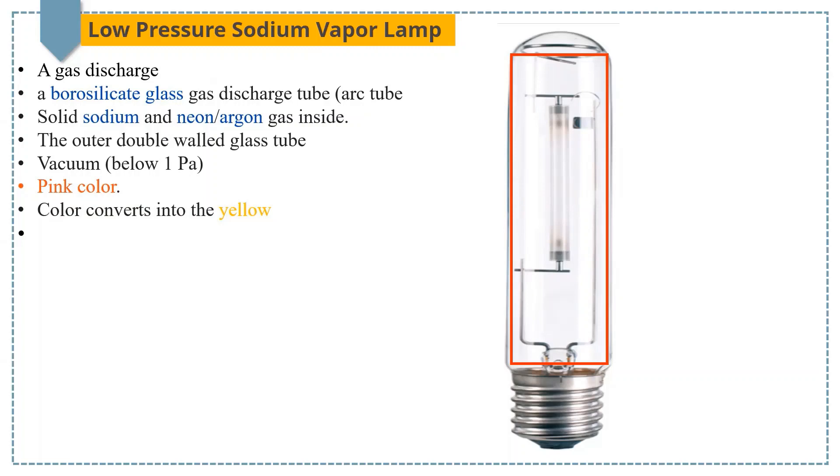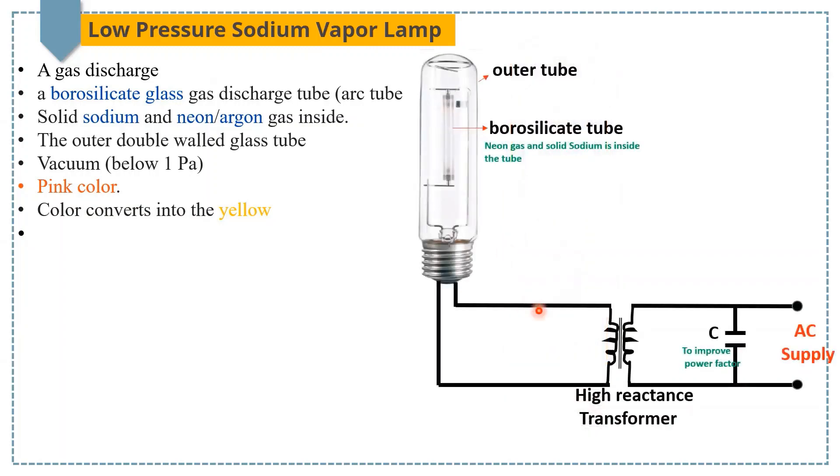In order to start the electric discharge inside the tube, electric power is applied to the lamp. As a result, the arc is passed through the discharge tube containing neon gas and the lamp starts emitting reddish pink light. The current increases the temperature inside the tube with the passage of time and this temperature rise vaporizes the metallic sodium.